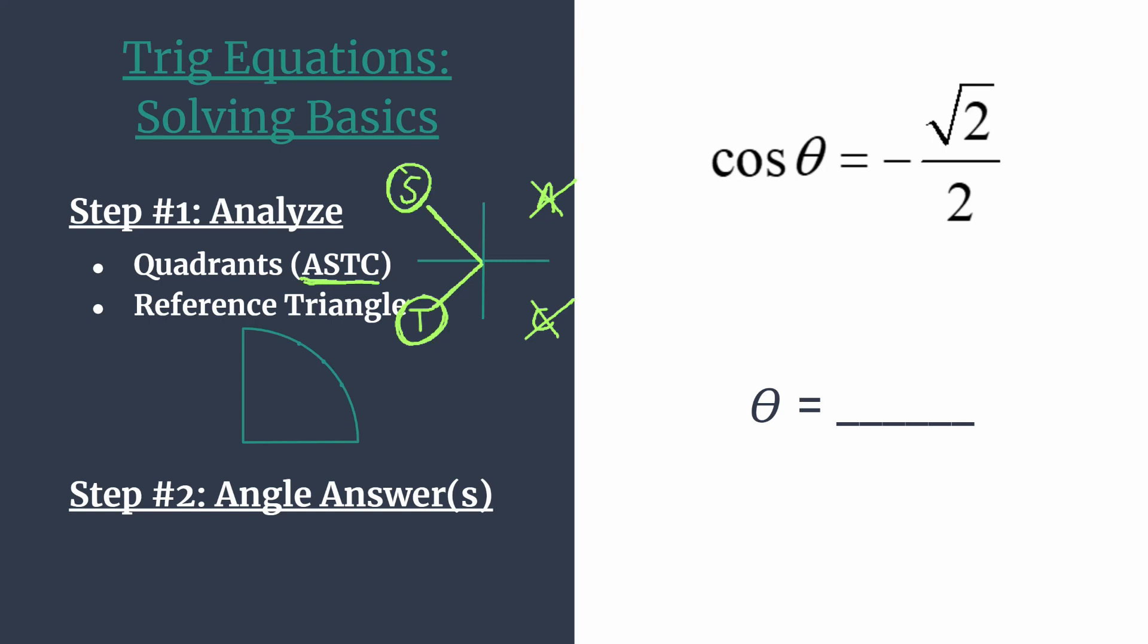So the next thing we want to do, we're going to figure out which reference triangle we're working with. And I like to just do this in quadrant one. So all the values are positive because we're going to synthesize in step two to make sure we have the correct angles. So one thing to remember when we're working on the unit circle, the cosine of an angle is going to be the X coordinate.